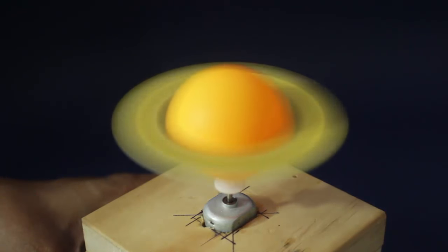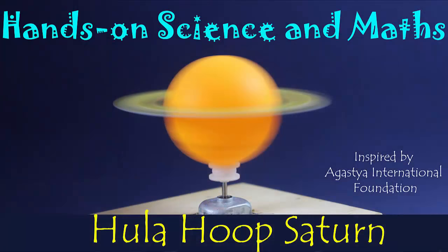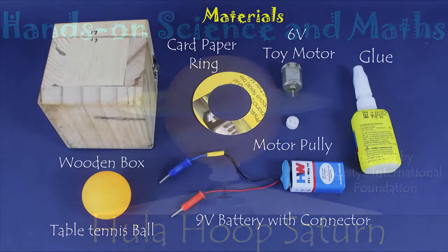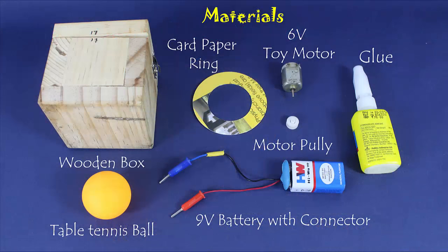In this interesting model, a toy motor spins a ping pong ball. A card sheet ring placed on the spinning ball keeps spinning. It looks like Saturn's ring.